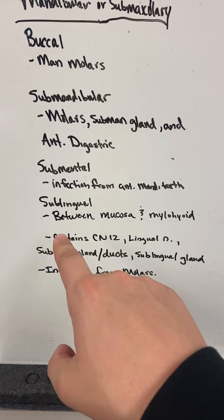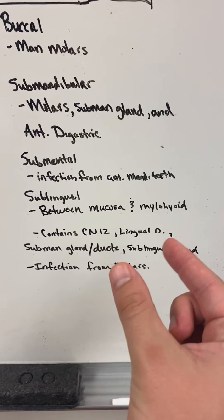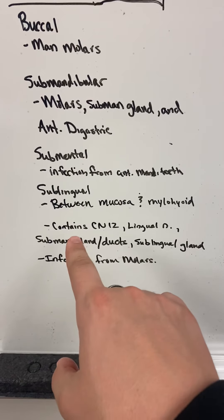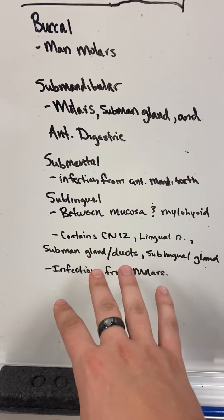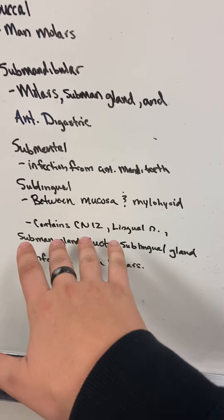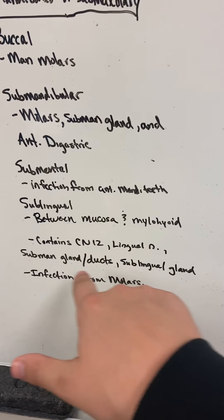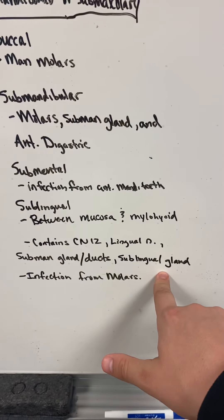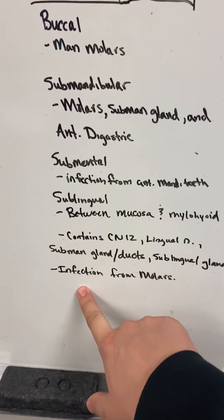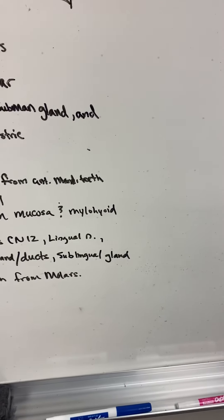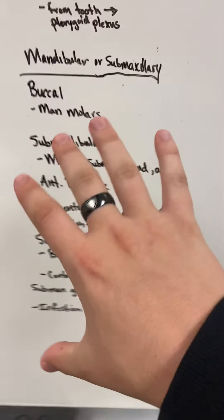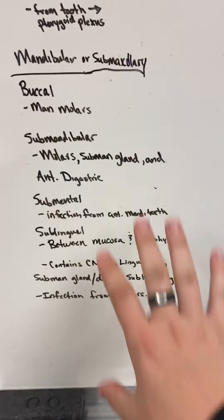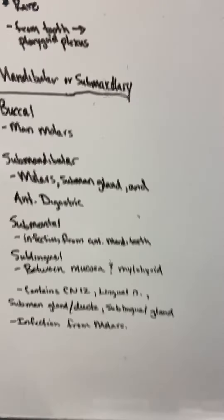We have sublingual, so this is between the mucosa and the mylohyoid. In that little area in that one photo we've had to label so many times, it has cranial nerve 12, the lingual nerve, submandibular gland and ducts, and the sublingual gland. This would be infection from molars. So those are the primary spaces.